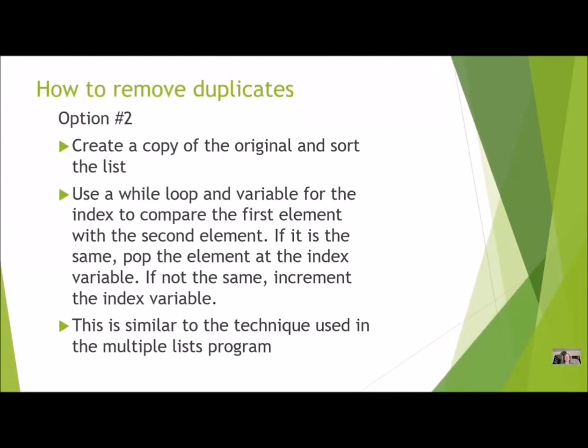Option number two: you go ahead and create the copy of the original list and sort it, so it's going to be in order from lowest to highest. Then you're going to use a while loop and a variable for the index to compare the elements — similar to what we did in the multiple lists program where we compared to see if they were the same. But this time, if they are the same, you pop that element at the index variable. If they're not the same, you increment the index variable. It's a slight modification from what you did in the multiples program.